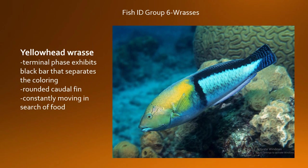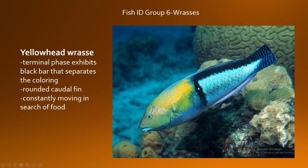The yellowhead wrasse gets its name because it has a yellow head that extends to almost half of its body length. Its distinguishing feature, in addition to the yellow head, is that dividing bar on the latter half of the body and the black stripe that runs all the way back to its tail. It's the same shape as the bluehead wrasse, but these terminal fish tend to be a little bit larger. These will hunt the bottom looking for crustaceans — they're always moving, always on the run.